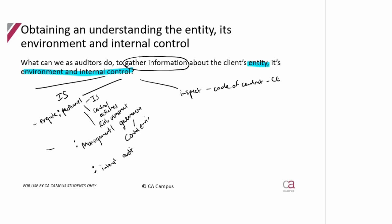Instead of just inquiring and inspecting, we could observe the controls being performed. As we saw in the standard under the information system, you could actually do a walkthrough — you can see how it's done from start to finish, how the transaction goes through the controls. I can observe controls, I can go and look at the security within the business — do they lock things, is there an alarm system — just to understand a little bit more about the controls.